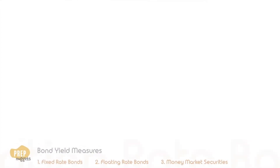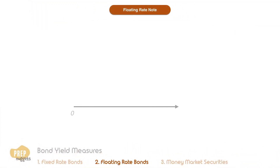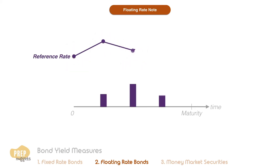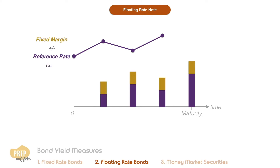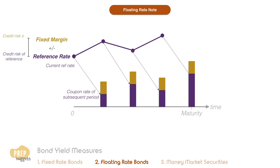Let's move on to floating rate notes. Recall that the coupon rate on a floating rate note is the reference rate plus or minus a fixed margin. Notice that the current reference rate is used to set the coupon rate for the subsequent payment — we say that interest is paid in arrears. The margin is fixed based on the credit risk of the issuer relative to the credit risk of the reference rate instrument at issuance. This margin that is fixed at issuance is called the quoted margin.